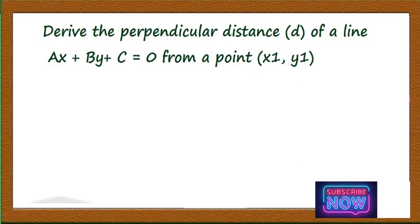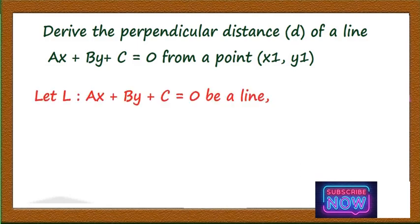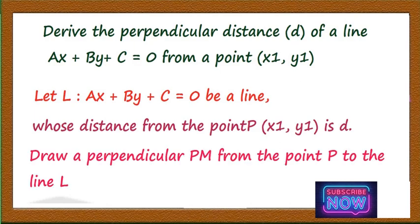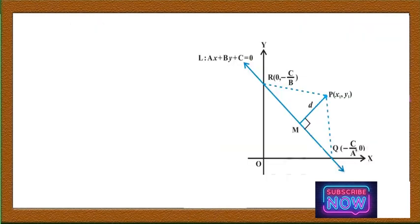The question will be asked like this: derive the perpendicular distance of the line ax + by + c = 0 from a point (x1, y1). To derive this, consider the line ax + by + c = 0 and we have to find the distance from the point P(x1, y1). Draw a perpendicular PM from the point P to the line l — this is the figure you have to draw, where P is a point and ax + by + c = 0 is the line.